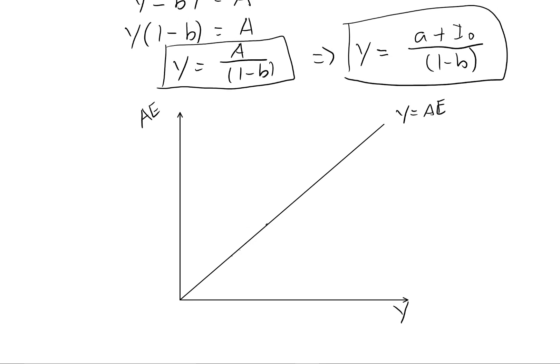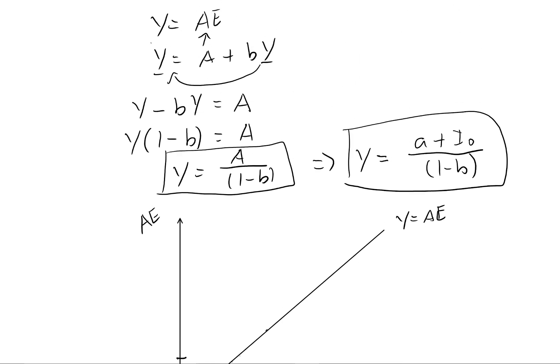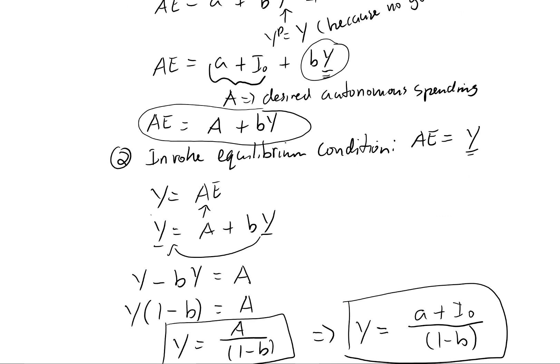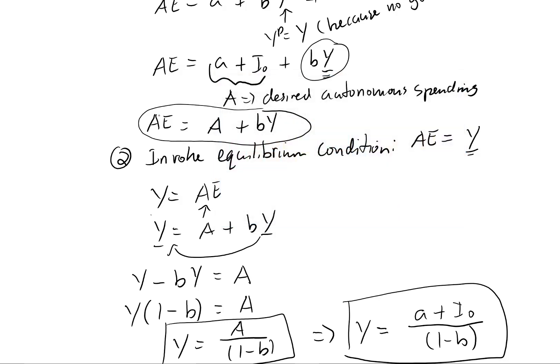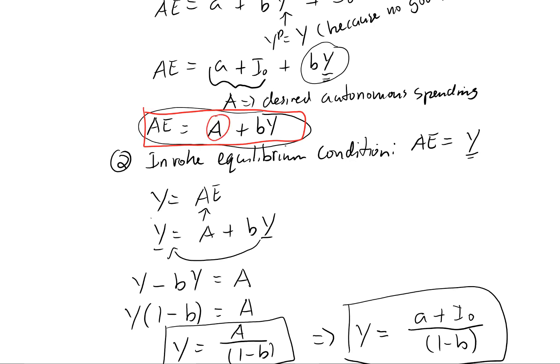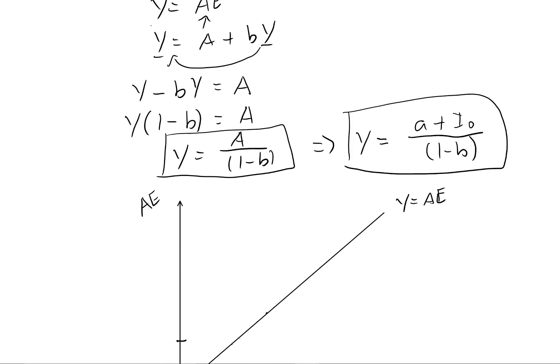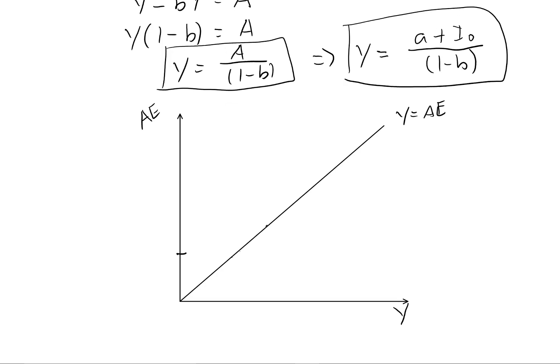So if we remember from our functional forms, we have a certain level of autonomous aggregate expenditure. So this capital A. So remember if we scroll up here, our capital A, let's just make it clear what I'm talking about. Okay, so I'm talking about this right here. We want to graph this as well on the graph. And we know that capital A equals A plus I zero. I know this is getting a little bit complicated, but bear with me.